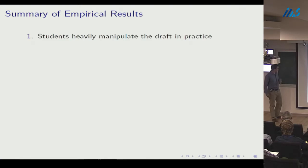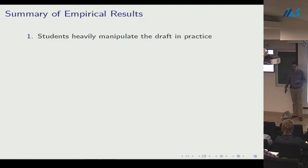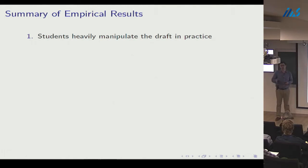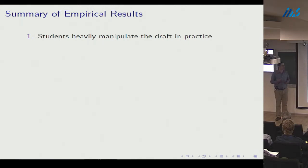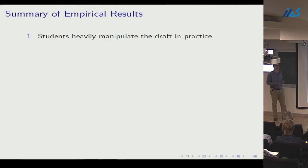Our empirical results: students do heavily manipulate the draft in practice. They systematically over-report preferences for popular courses and under-report preferences for unpopular courses. This causes popular courses to reach capacity faster under strategic play than under truthful play — a form of congestion in this market.